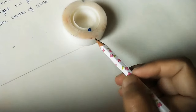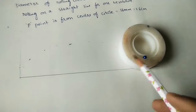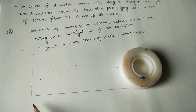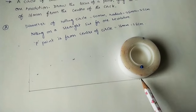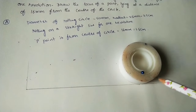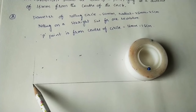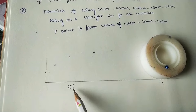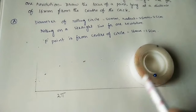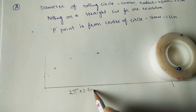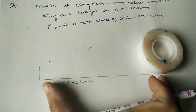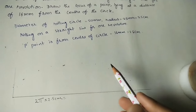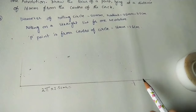The circle completes one full rotation, so P comes back to the same relative position. The circle travels a distance of 2πr — the circumference of the circle — in one revolution. So we calculate 2πr, which is 2 × π × radius. We mark this as the length of the straight line, and within that we mark all P positions. Joining all P points gives us the trochoid.